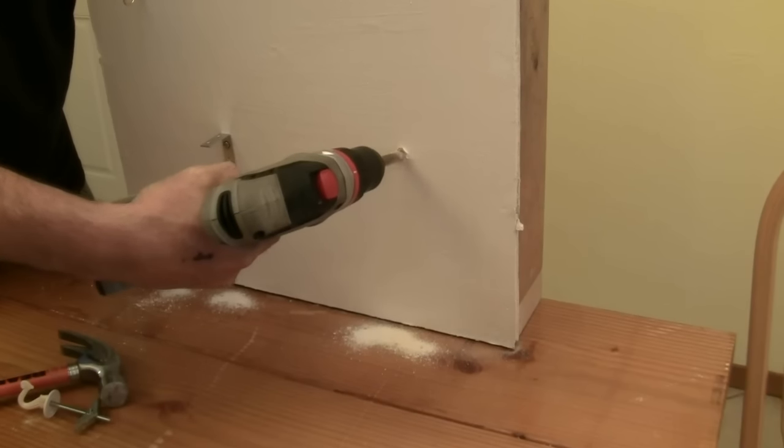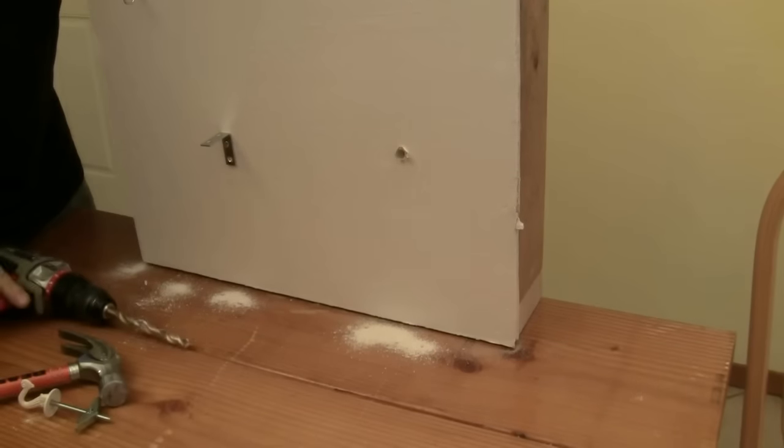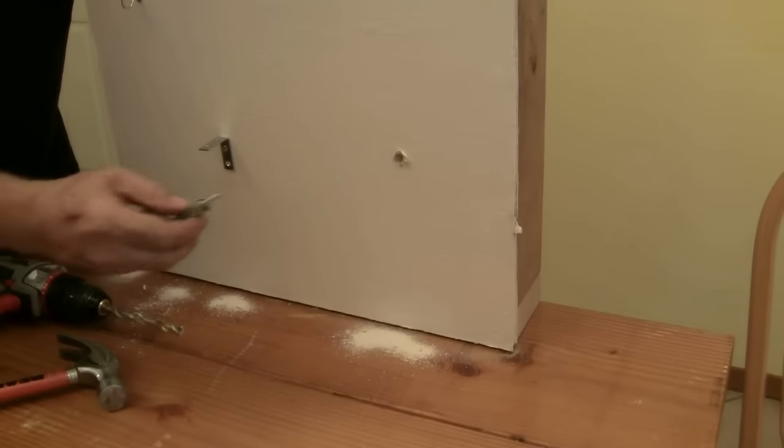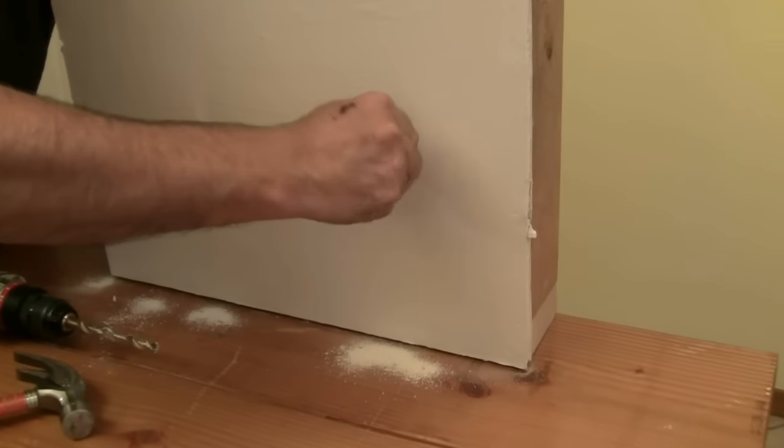Drill a hole just large enough for the folded toggle to pass through. Assemble any hanging hardware needed for the project onto the bolt. Push the toggle bolt through the hole and pull the bolt toward you.